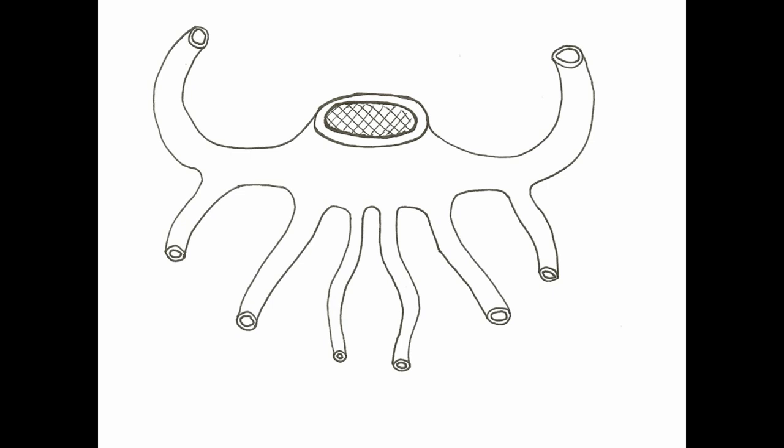Hi everyone. Today we're going to talk about the cardinal veins and how they form the mature blood drainage system of the body. We're going to start off with something that looks nothing like anything we've seen in human anatomy. This flying spaghetti monster looking amalgam here is a little representation of the early venous system.